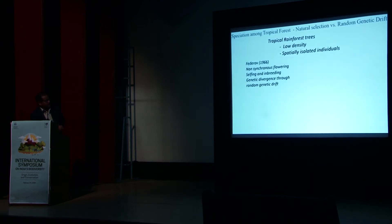So the tropical rainforest trees, they're considered to be low density, especially isolated individuals, as Dr. Rabin this morning mentioned in his speech as well. And in 1966, Federal thought these were actually isolated trees, they were non-synchronous flowering, therefore selfing and inbreeding may be much more prevalent. So genetically speaking, then those individuals may be isolated, that can lead to different species through just random genetic drift.